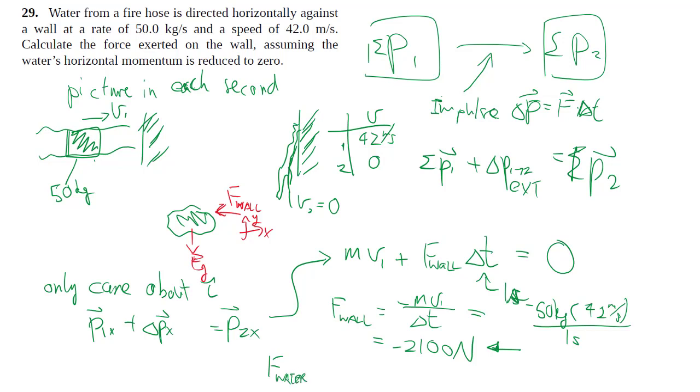Which is what we expect, as we shoot a stream of water from a hose onto a wall, it pushes it in the direction of the water while the wall slows the water down.